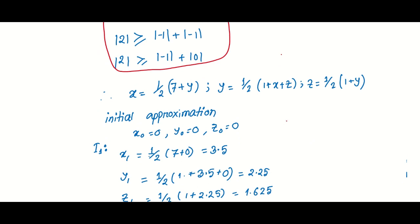Our initial approximation uses initial values: x is equal to 0, y is equal to 0, and z is equal to 0. This is the starting point for the iterative process.